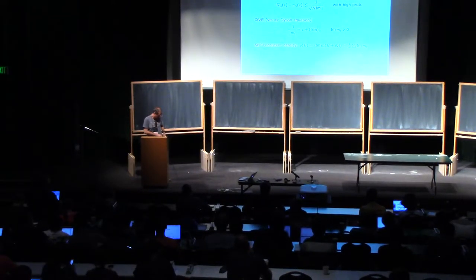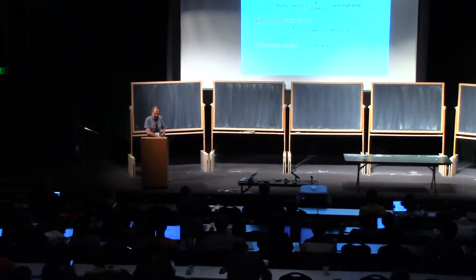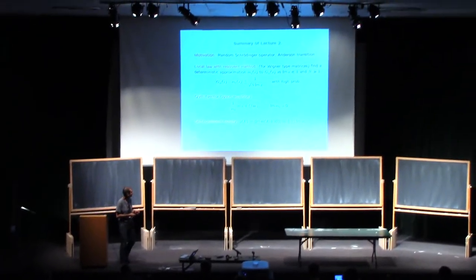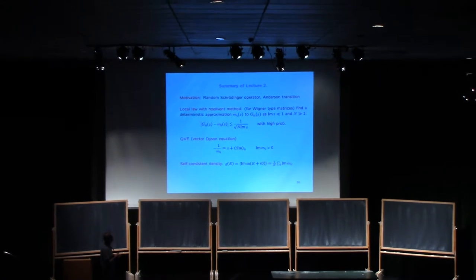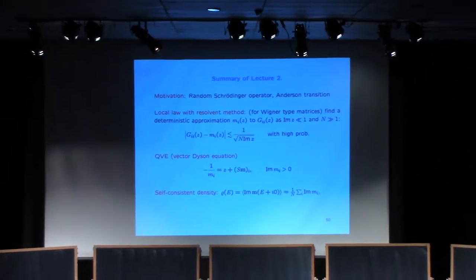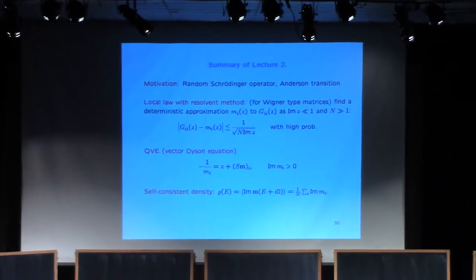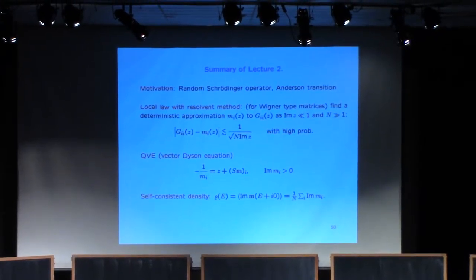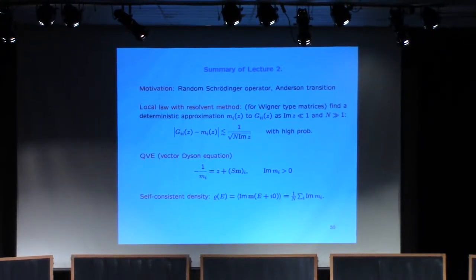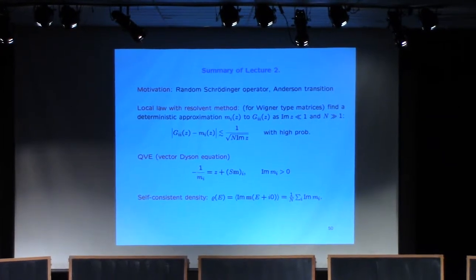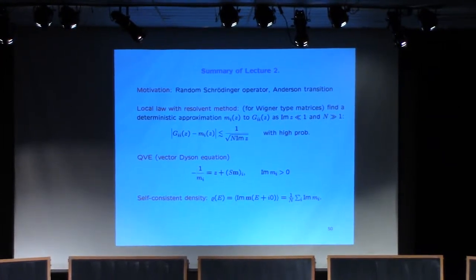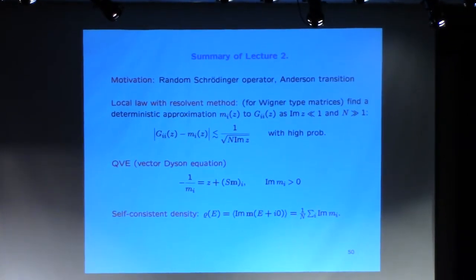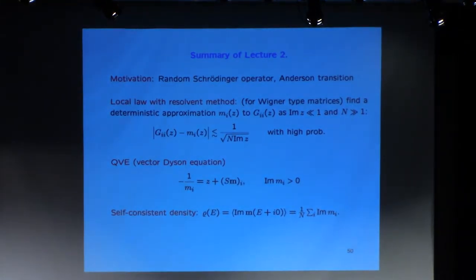Before we go into the new material, let me just summarize on two slides what we did yesterday. In a short summary, first I gave you a little motivation - the overview about random Schrödinger operators, disordered quantum systems, about Anderson transition. This was an indication that random matrices, as a theory, is useful not just in probability theory, but also has some relevance in physics as well.